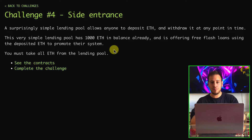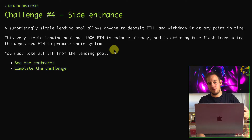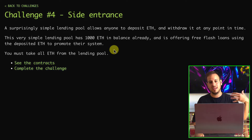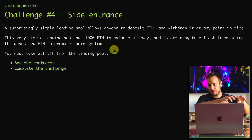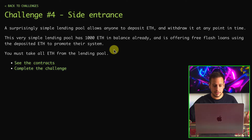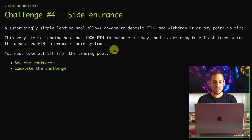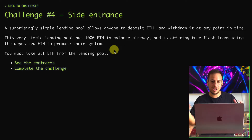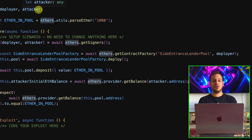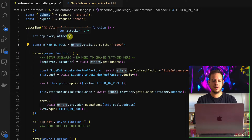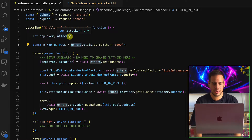So there is a lending pool that offers flash loans and on the other hand, it offers to deposit ETH so they can use this deposited ETH to give flash loans. We have to take all the ETH from the lending pool and somehow hack it. Let's first explore the JavaScript test file and the smart contract to see what we can find out.